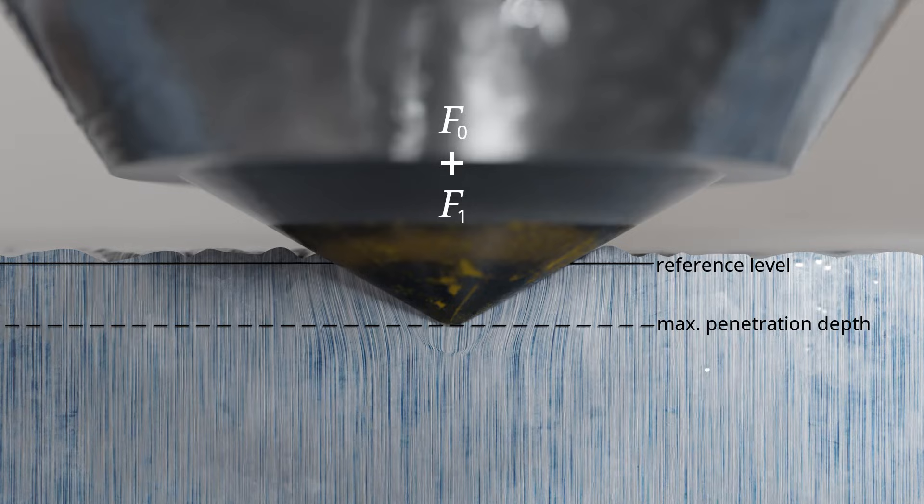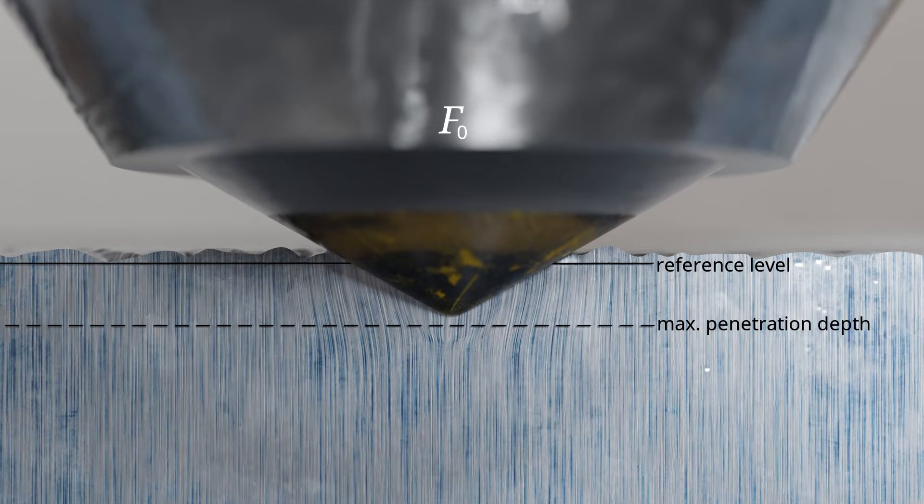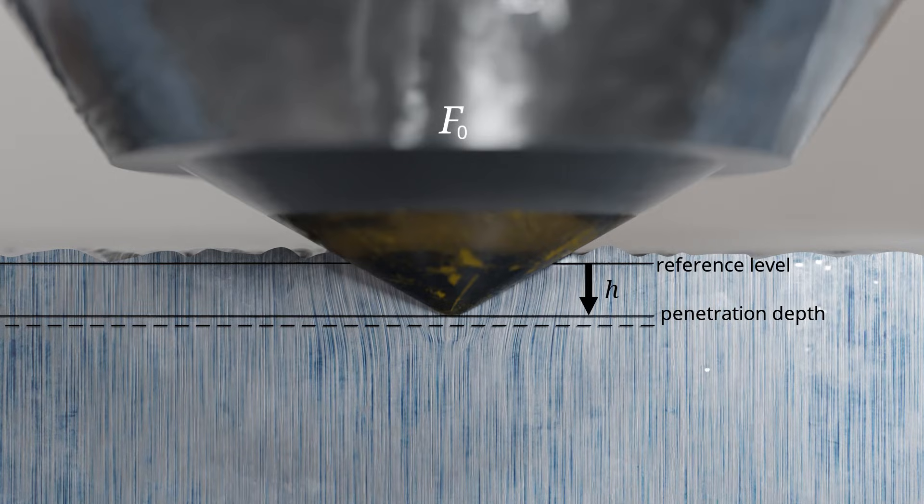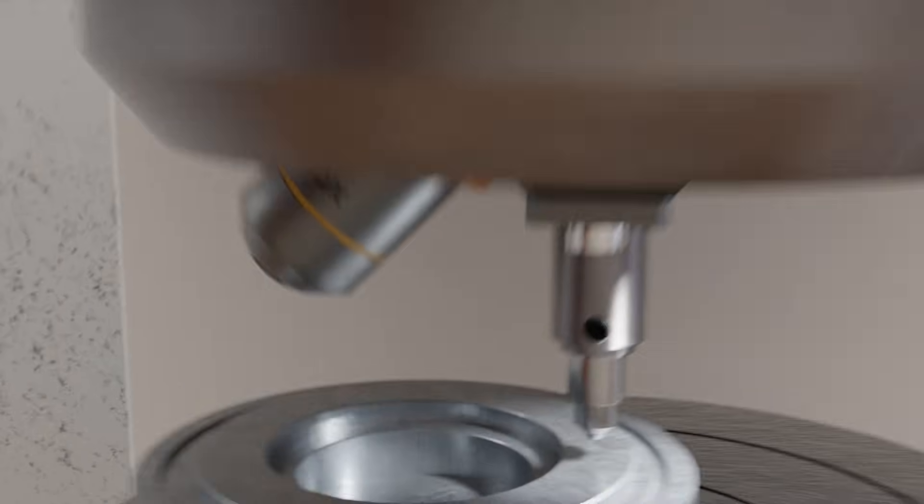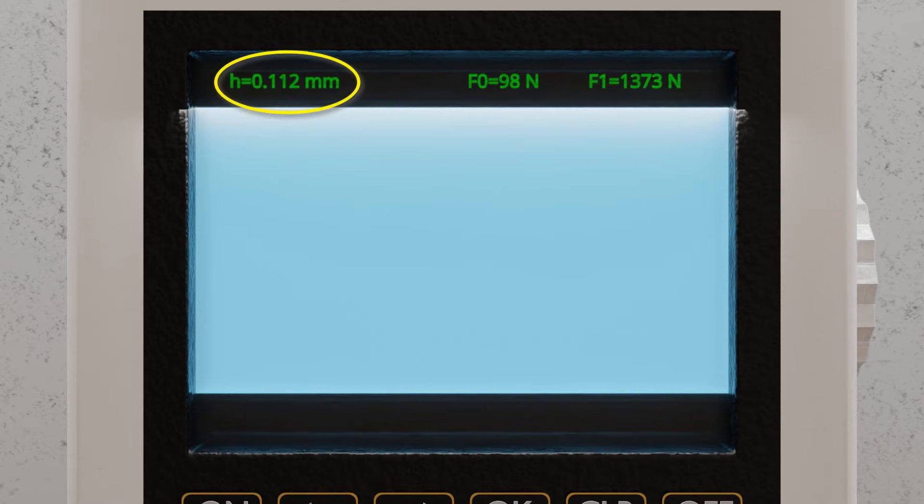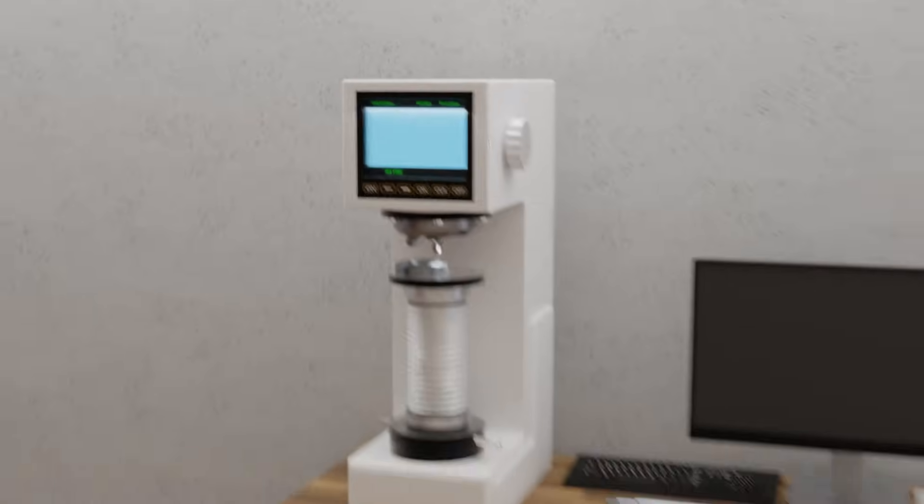After the indenter penetrates the material surface with the applied total force, the test force F1 is removed. The material is then subjected only to the preload F0, causing the indenter to lift slightly due to the elastic deformation of the sample. However, contact with the sample is maintained. The remaining indentation depth H, measured while maintaining the preload F0, is used as the basis for calculating the hardness value. In this example, an indentation depth of 0.112 mm is achieved using the diamond cone. This corresponds to a Rockwell hardness value of 44 HR. The fundamental steps for calculating this hardness value from the measured penetration depth will be explained in more detail in the following.